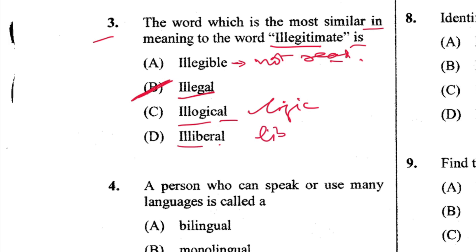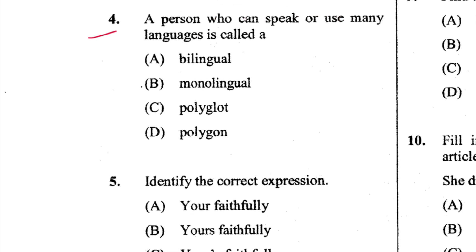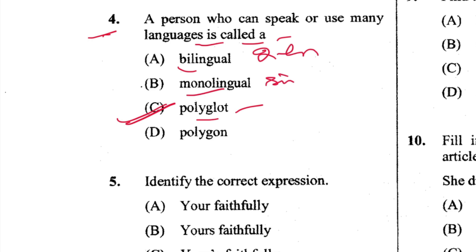Question 4: A person who can speak or use many languages is called a polyglot. C is the answer. 'Bilingual' means two languages, 'monolingual' means one language. 'Polygon' is obviously a shape.